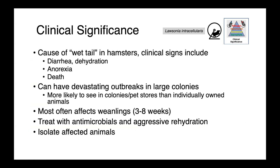In hamsters, Lausonia intracellularis causes wet tail. Clinical signs include diarrhea, dehydration, anorexia, and potentially death. In large colonies, we can see devastating outbreaks, and infections are more likely in larger populations such as breeding colonies or pet stores rather than individually owned animals. These infections are most often seen in weanlings between three to eight weeks old. Treatment requires antimicrobials and aggressive rehydration. Because this organism is spread via the fecal-oral route, it's important to isolate affected animals.